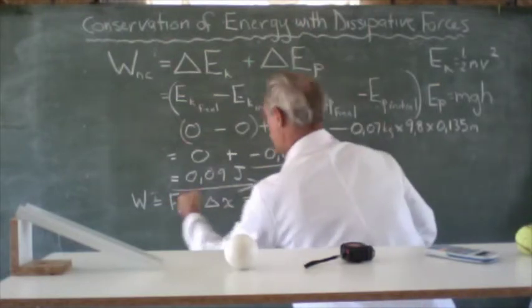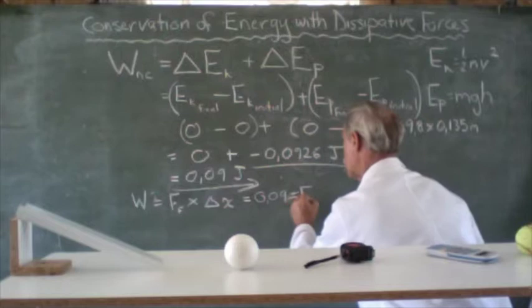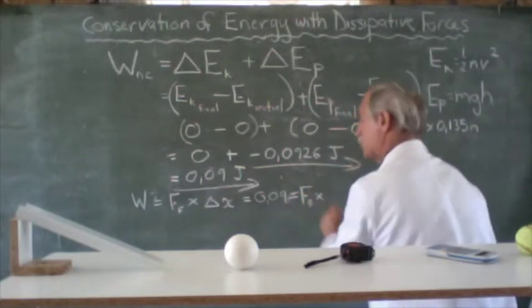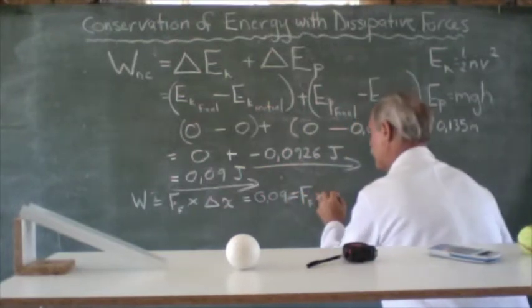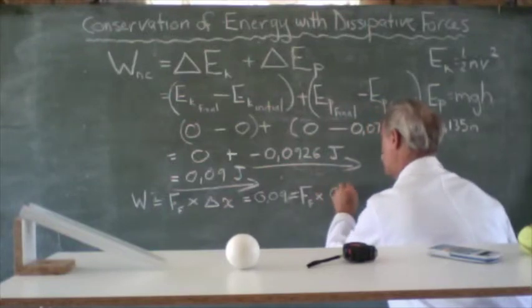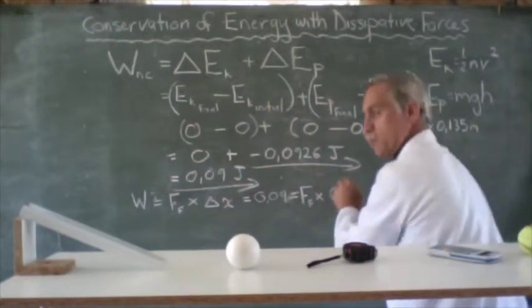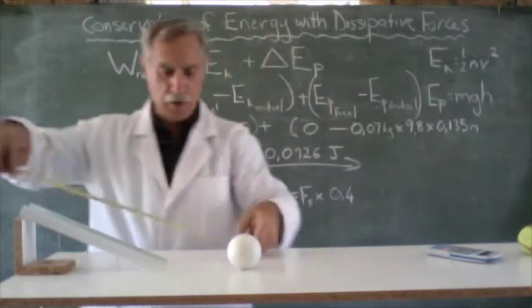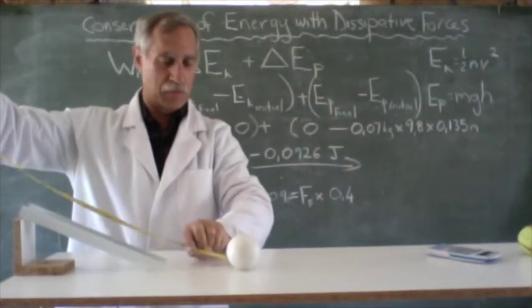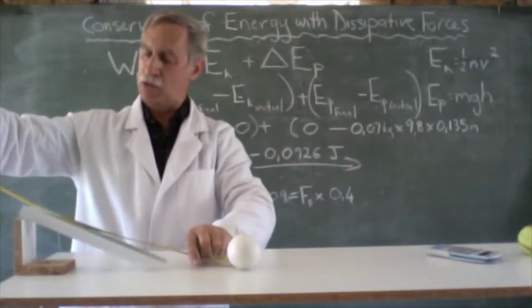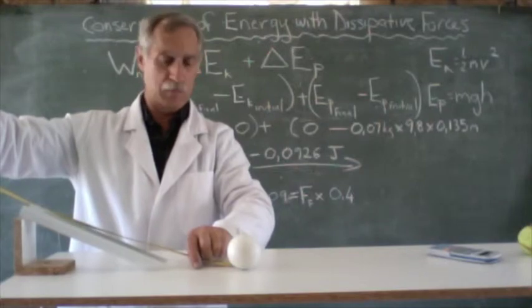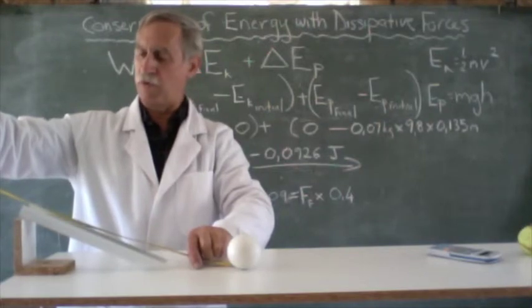Which is equal to, we know what the work done was, because this here that we calculated is 0.09 equals force of friction times displacement, which is what we measured as 0.45 meters.